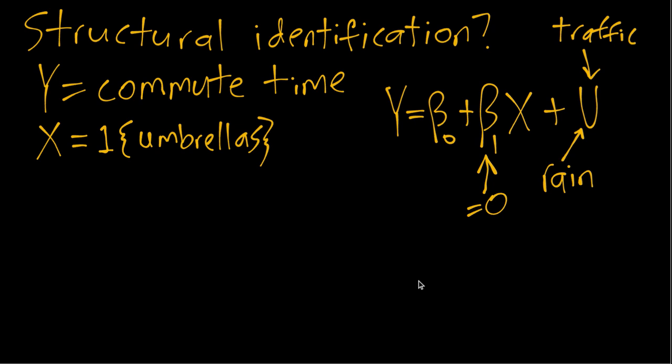So what we need in order to have identification here is we need x to be exogenous, meaning unrelated to u. But the problem here in this example is that x is endogenous, meaning it is related to u. And in different settings there's different mathematical ways of defining related and unrelated. In this particular setting we can think about how does the mean of u when people are carrying umbrellas compare to the mean of u when people are not carrying umbrellas.